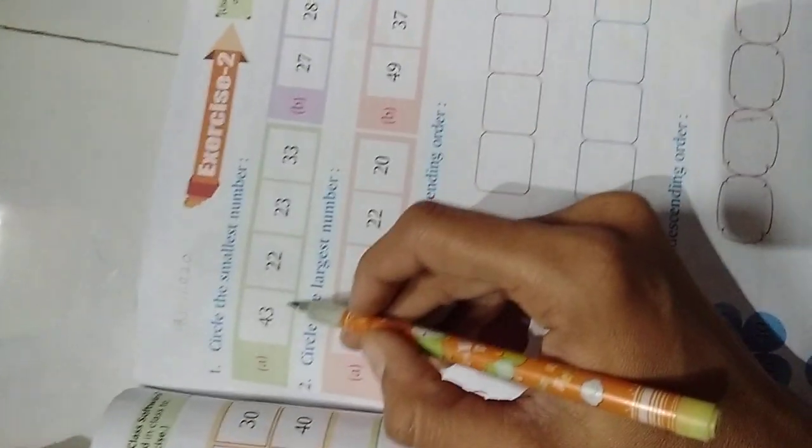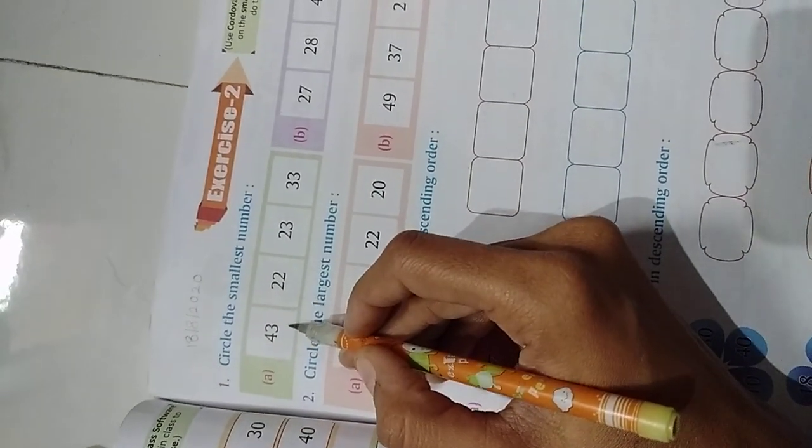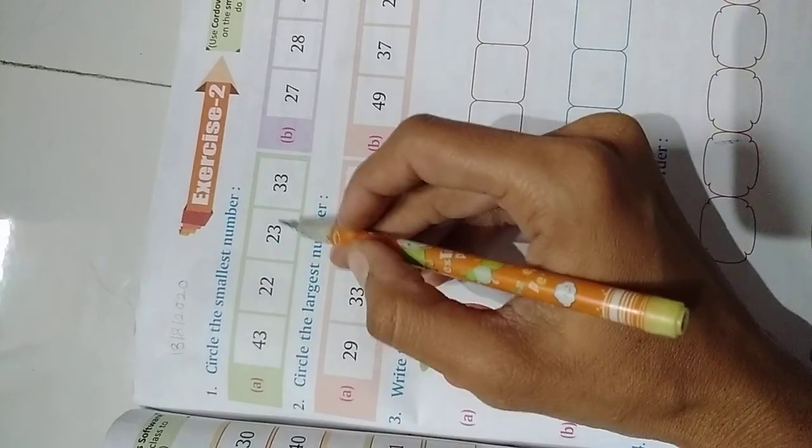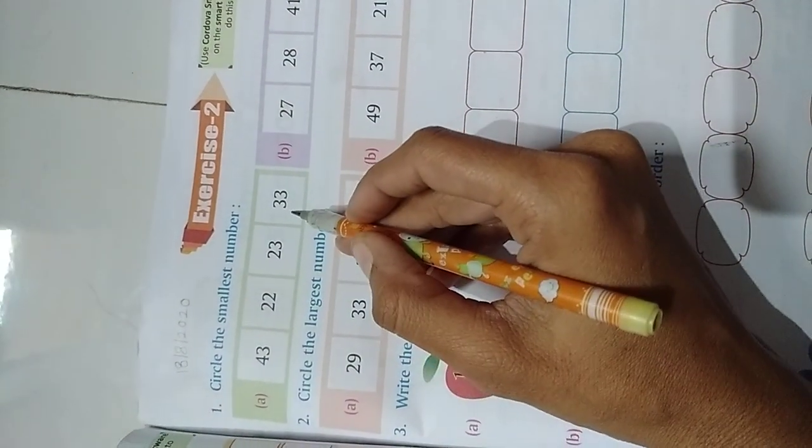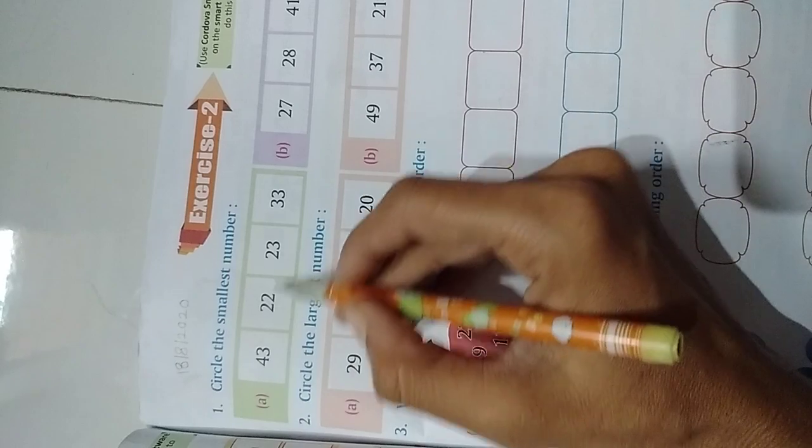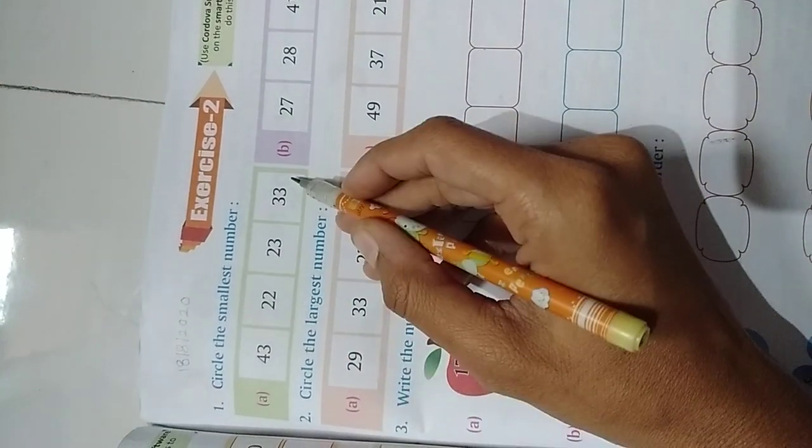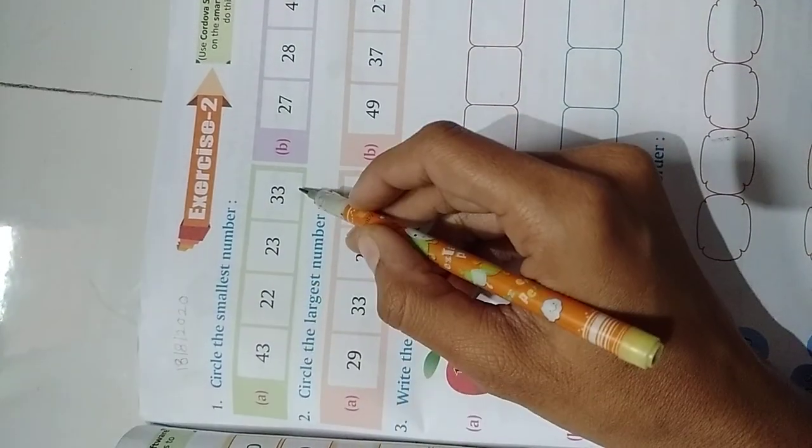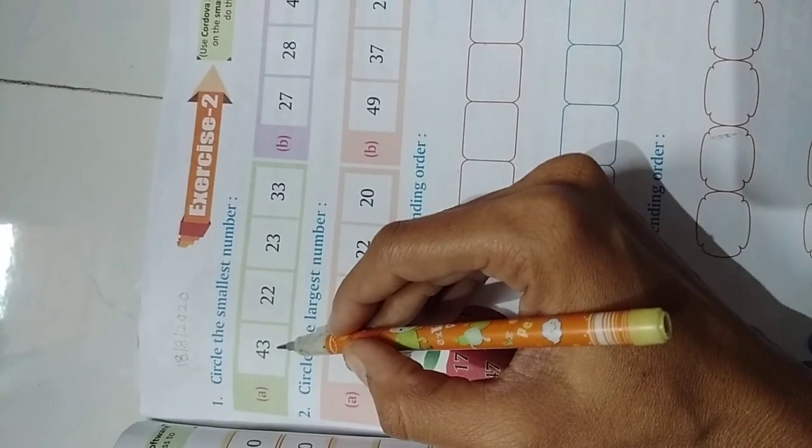First one. The numbers are 43, 22, 23, 33. In this we need to find which number is smallest. So first we need to observe here which 10s place is small. 4 is small? No.